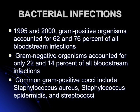This brings us to the next group of bacterial infections. From 1995 to 2000, we have seen the number of gram-positive infections increasing compared to the past. Gram-negative organisms now account for only 22 to 14 percent of all bloodstream infections in neutropenic patients. Common gram-positives include Staph aureus, Staph epidermidis, and Streptococcus. That is why some guidelines do not include vancomycin for the first neutropenic fever except under certain circumstances.